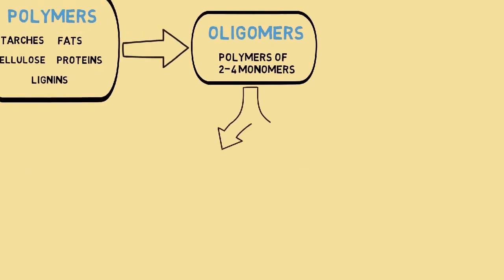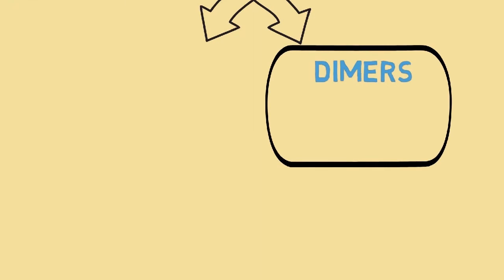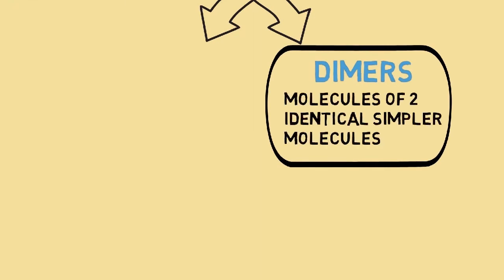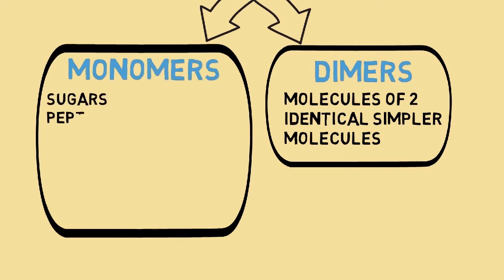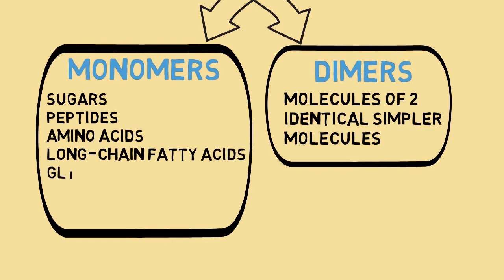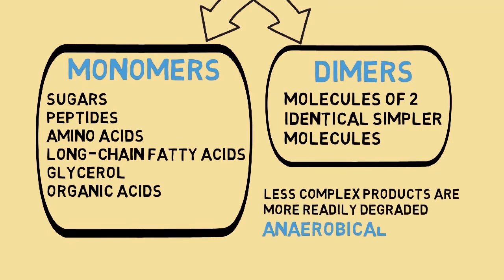These oligomers can then be further degraded into dimers — molecules consisting of two identical simpler molecules — and monomers, such as sugars, peptides, amino acids, long-chain fatty acids, glycerol, and eventually organic acids. These less complex products of aerobic degradation are more readily degraded anaerobically than the larger polymers.